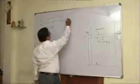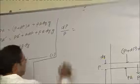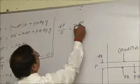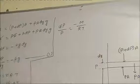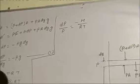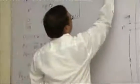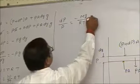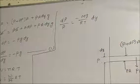From here we write dP by P equals minus mg upon RT dy. Obviously g will be there, so minus mg upon RT dy.